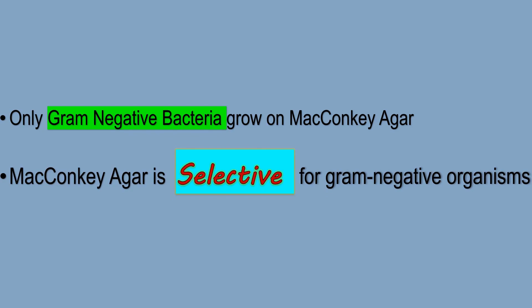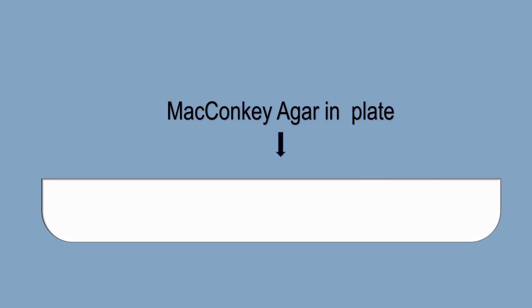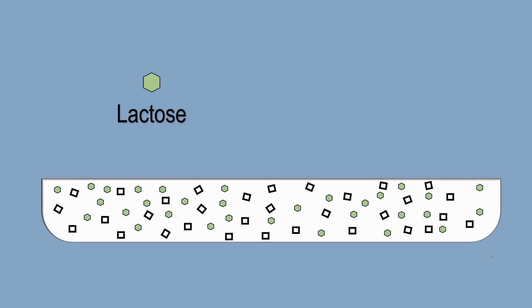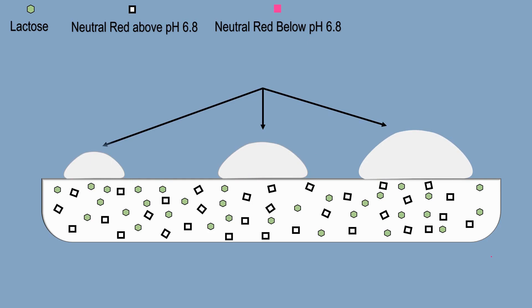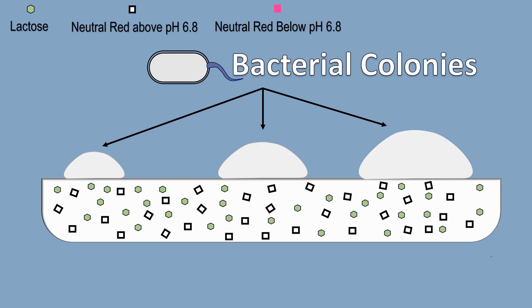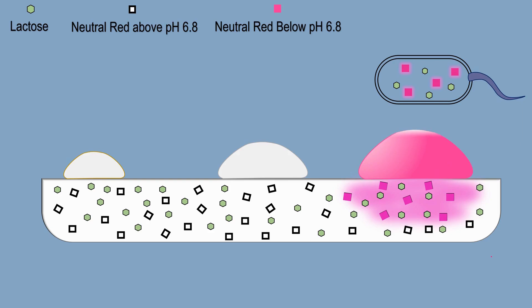Now let's see how McConkie's Agar is differential. Suppose this is the agar layer in the McConkie's Agar plate, containing two types of molecules: lactose and neutral red. Suppose there are three bacterial colonies growing on the surface. The bacteria in the first colony utilize more lactose, so they ferment the lactose present in the nearby agar layer. This lactose fermentation causes acid production surrounding the colony, lowering the pH of the medium to acidic, and the colorless neutral red molecules become pink at acidic pH. Therefore, the colony and surrounding area become pink colored.